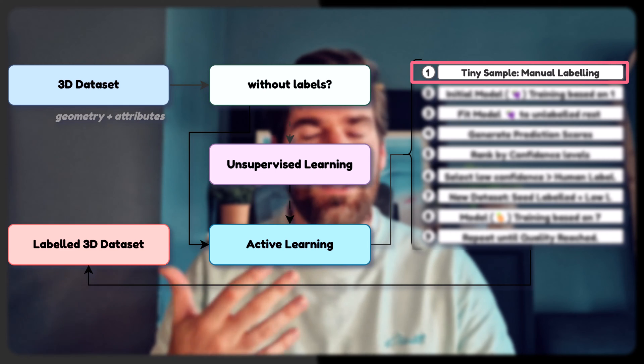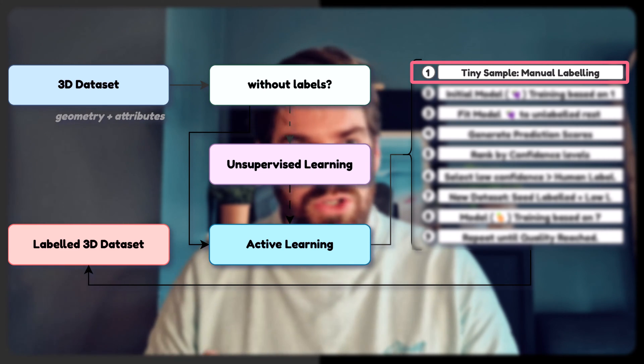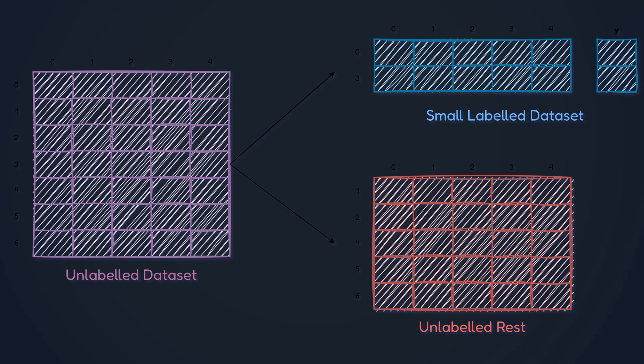With active learning, we go through a nine-stage process. The first stage is tiny sample manual labeling. We begin by manually labeling a tiny proportion of the dataset — about one or two percent of the data. You can use an unsupervised approach or simply label it manually. All the rest remains as the unlabeled dataset.